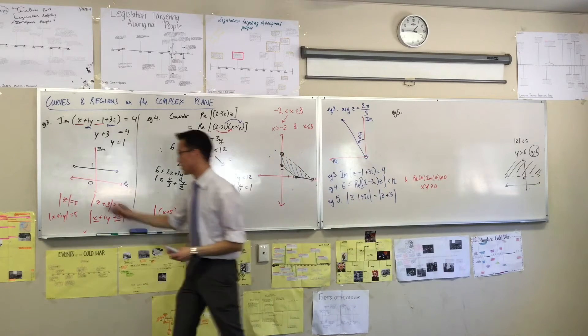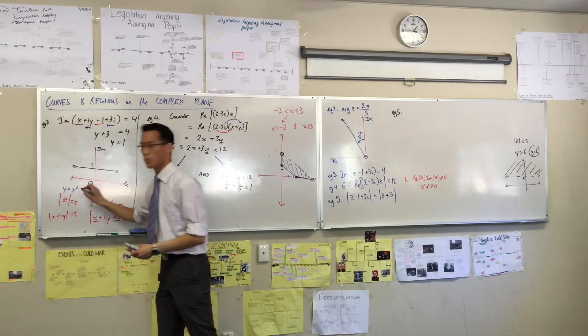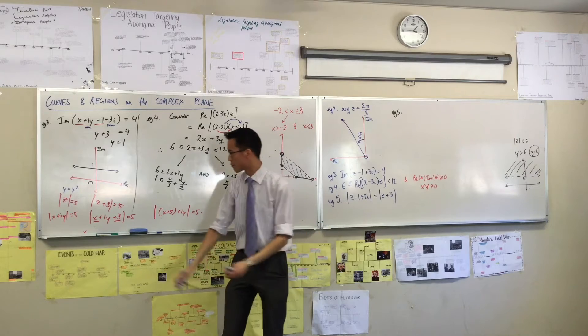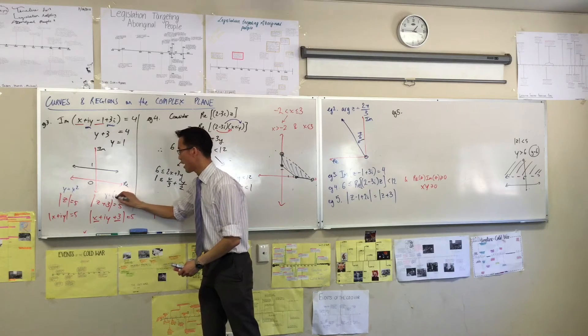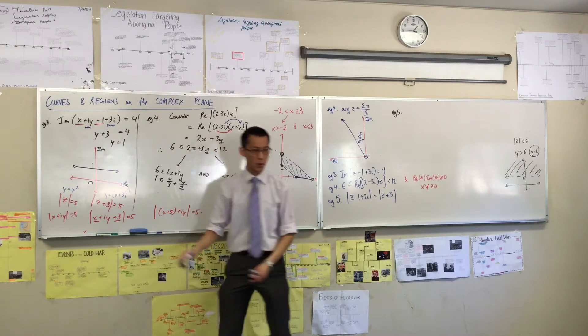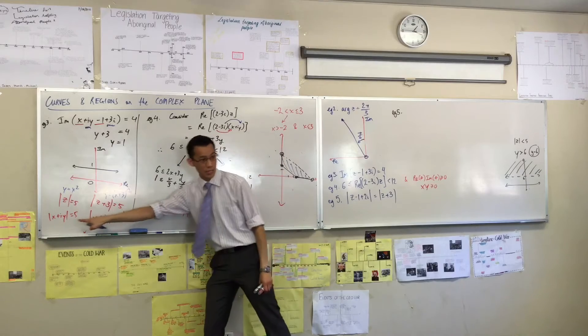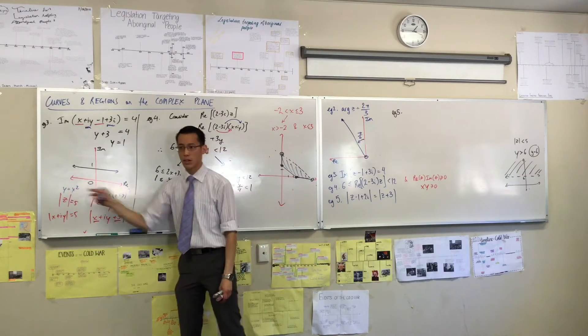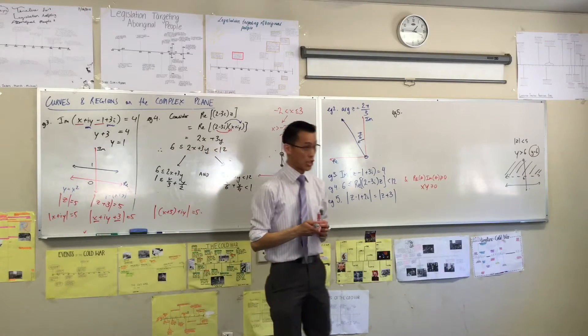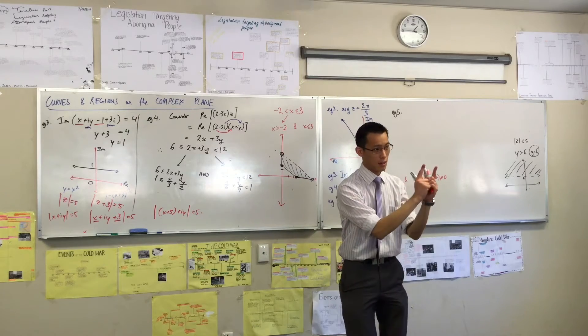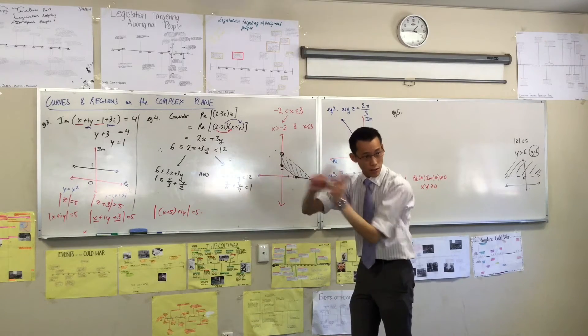If I asked you to compare something like y equals x squared, which you all know what that looks like, and y equals x plus 3 squared, that's like the difference here. You see that? What's the difference between these two guys? Same shape, translated 3 to the left, right?